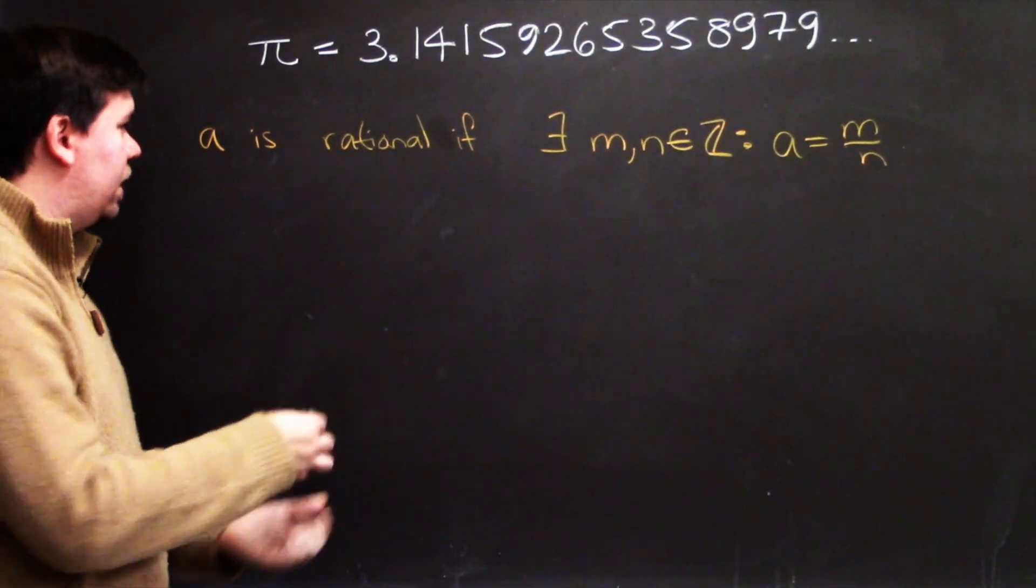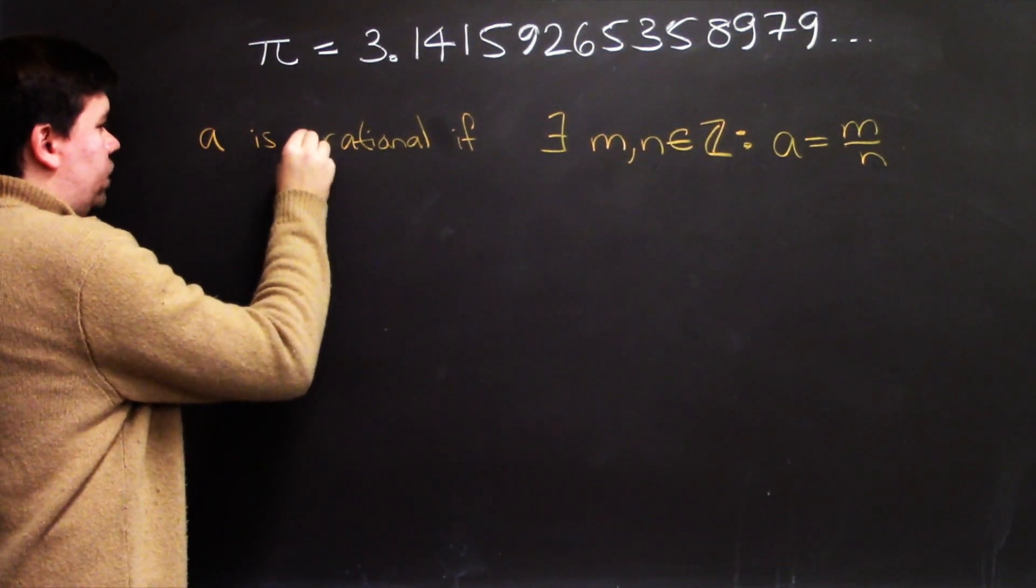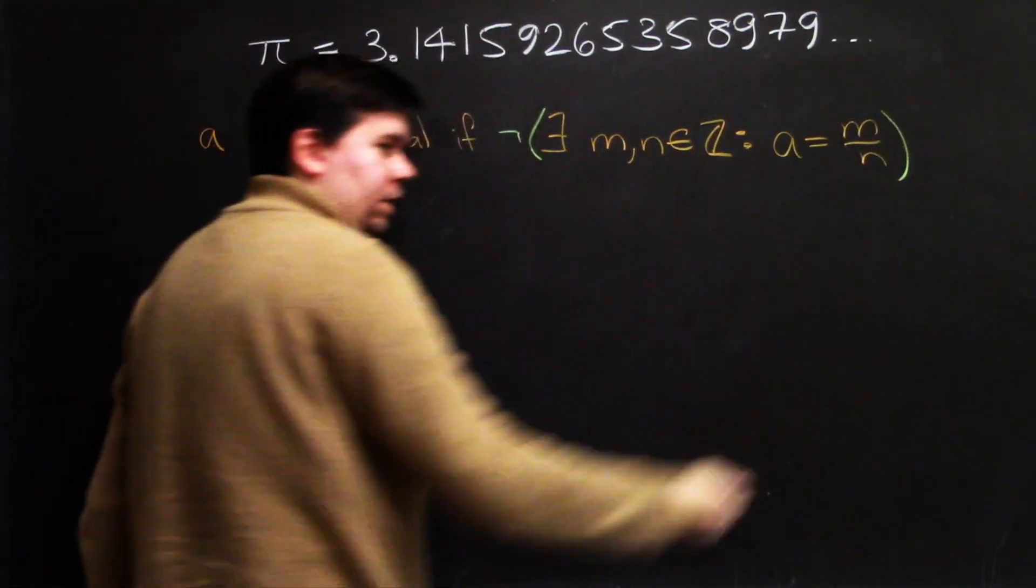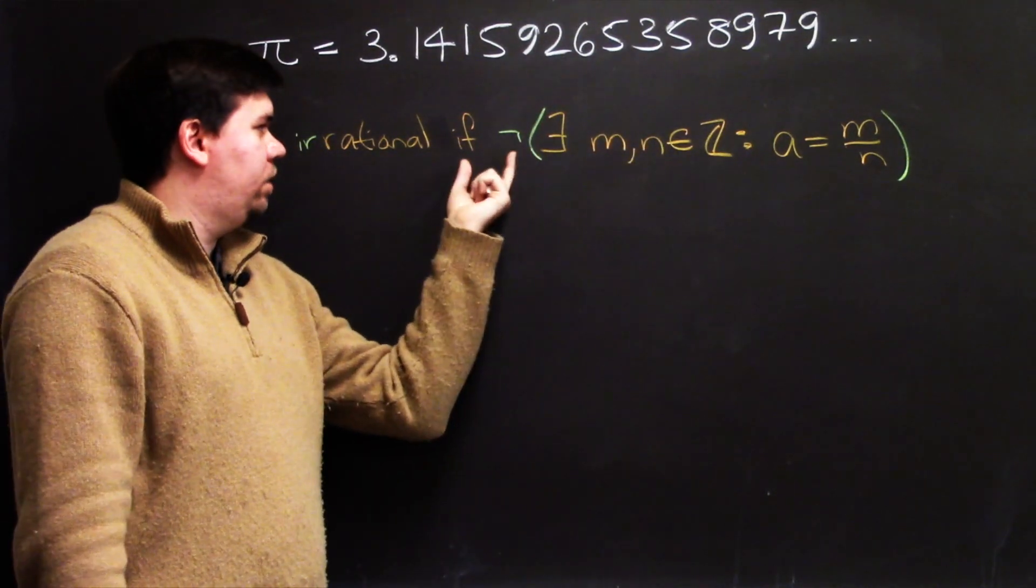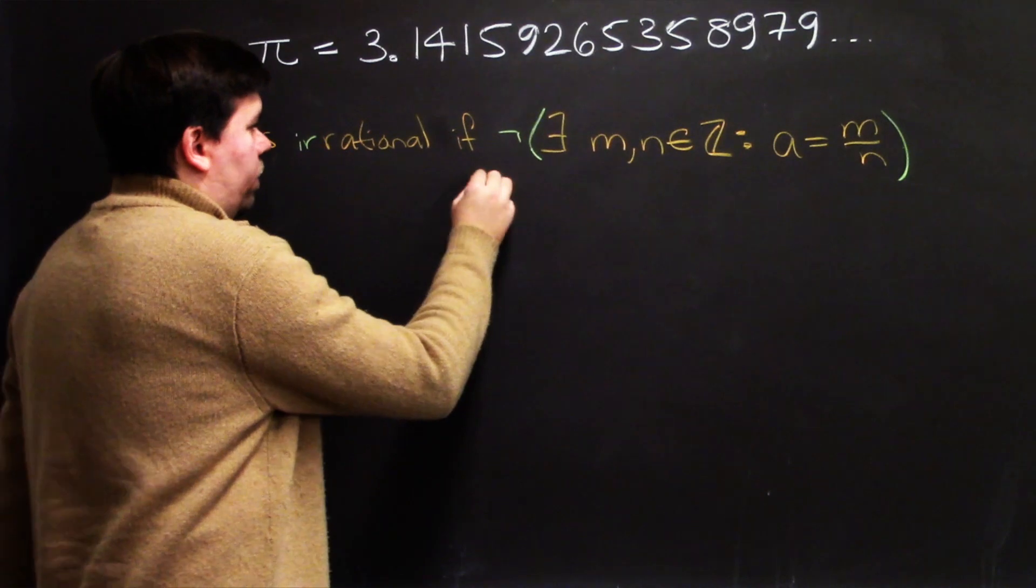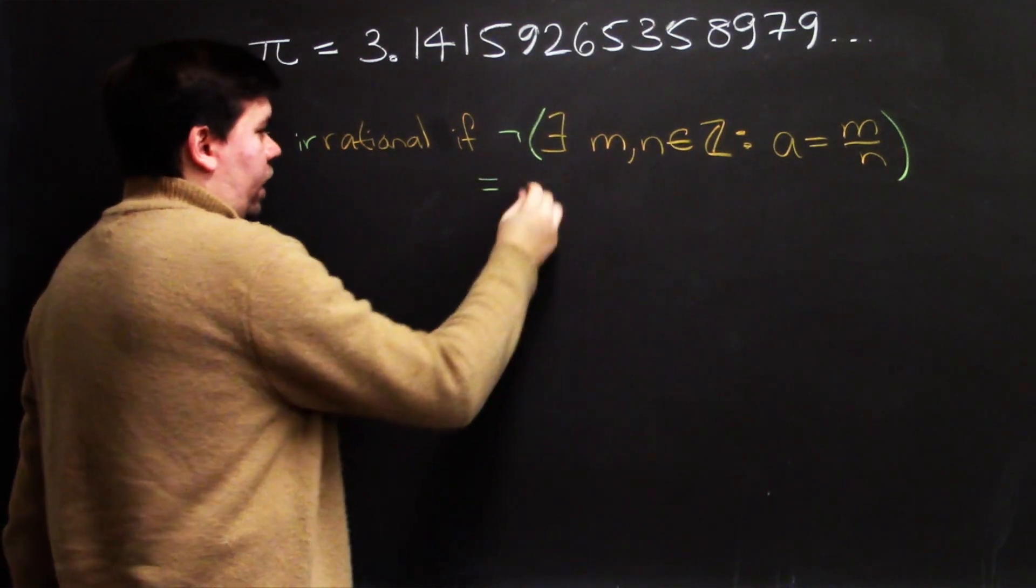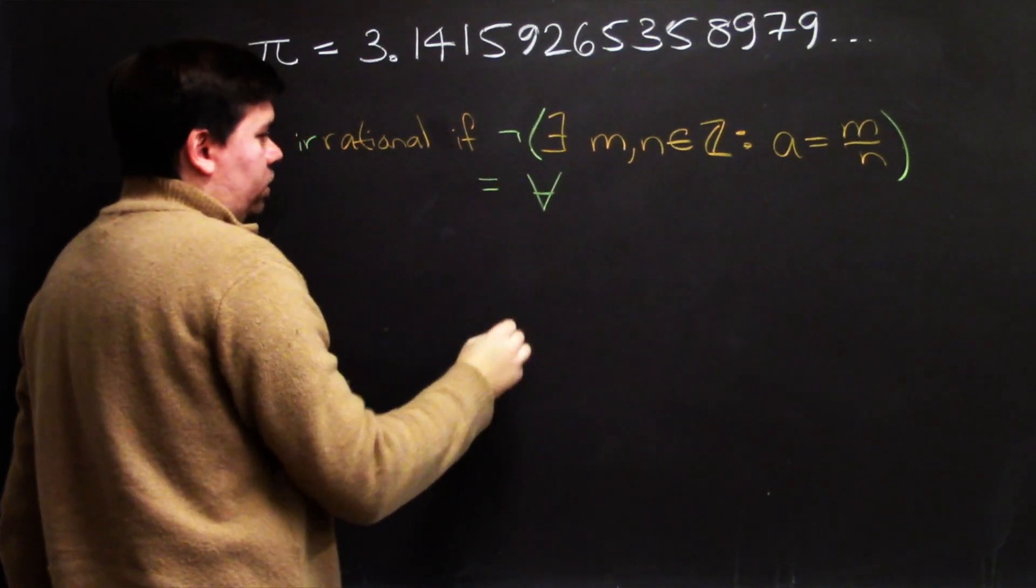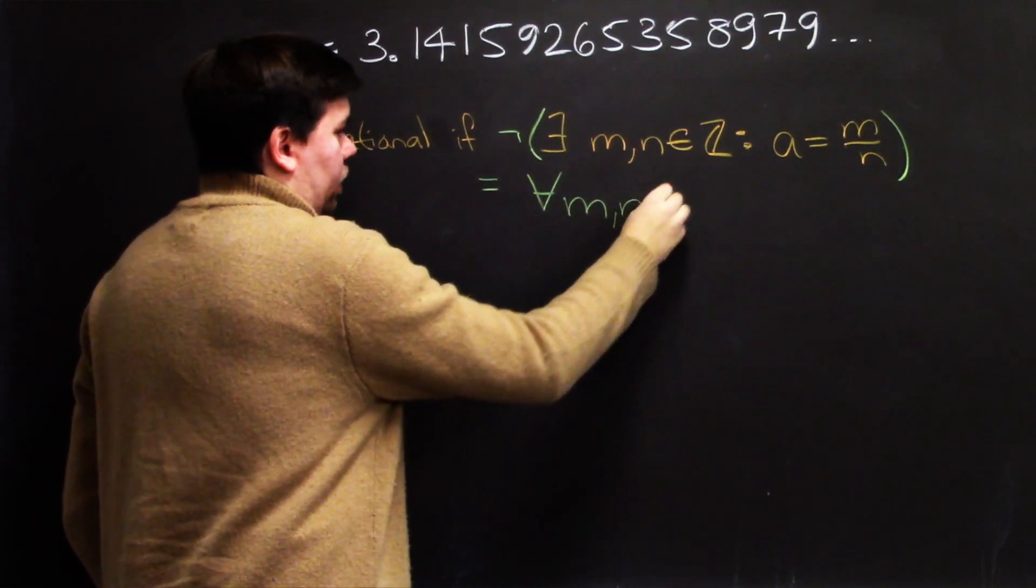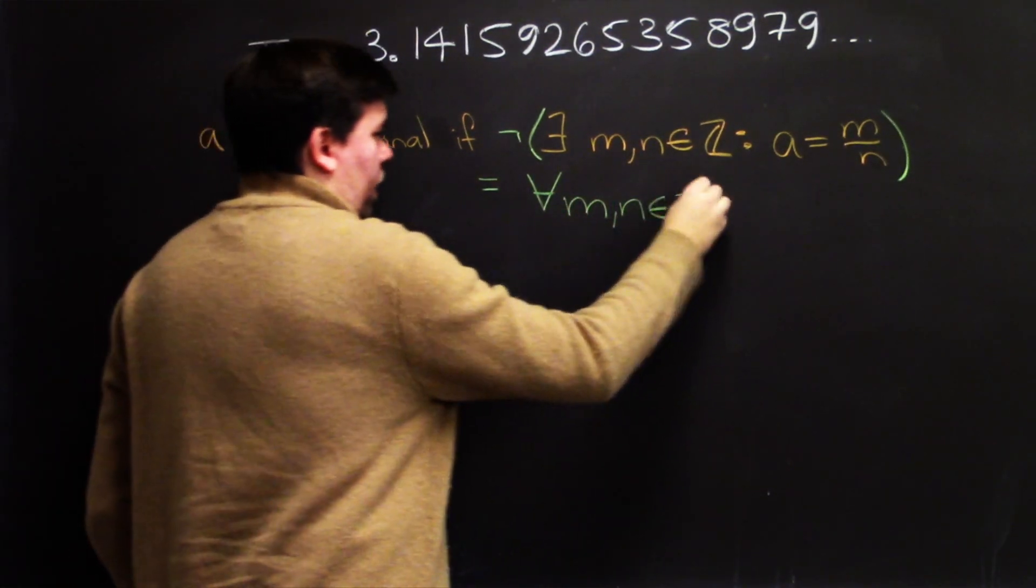What does it mean to be irrational then? Well, to be irrational just means that you're not rational, so you're just negating the statement. So how do you negate this existence quantifier? Well, we said that you negate an existence quantifier, we turn it into the universal quantifier that's for all m and n. So that's for any integers you might pick,